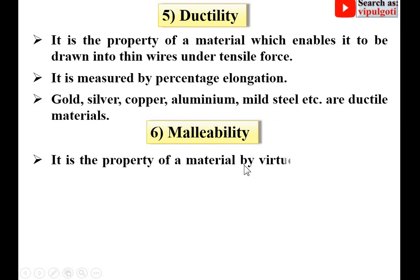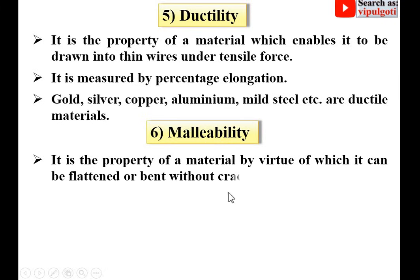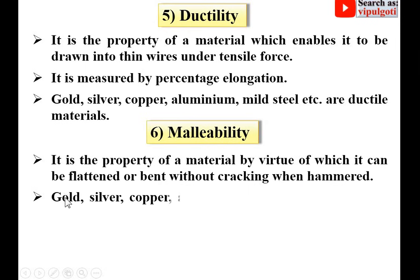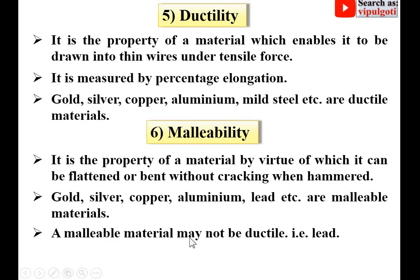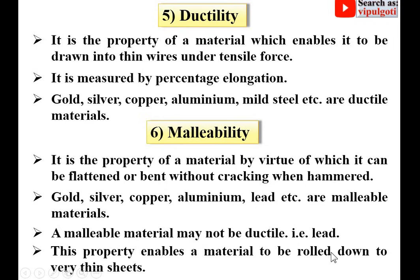Malleability is the property of a material by virtue of which it can be flattened or bent without cracking when hammered. Gold, silver, copper, aluminium, lead, etc. are malleable materials. An important point: a malleable material may not be ductile — example is lead. This property enables a material to be rolled down to very thin sheets. So, due to malleability you can roll down the material into thin sheets, and due to ductility the material can be drawn into thin wires.